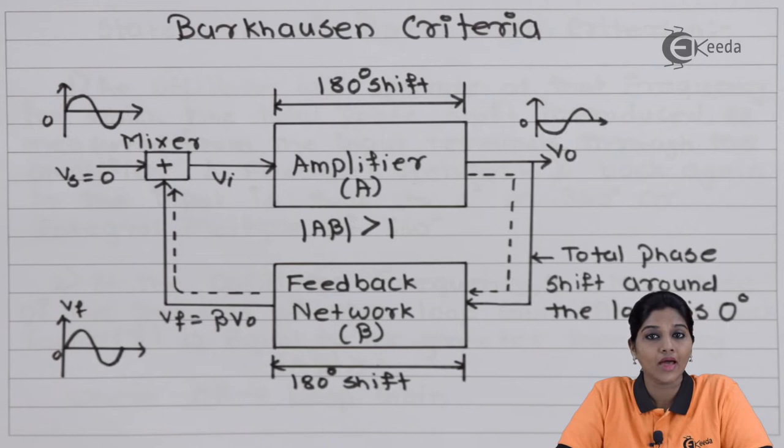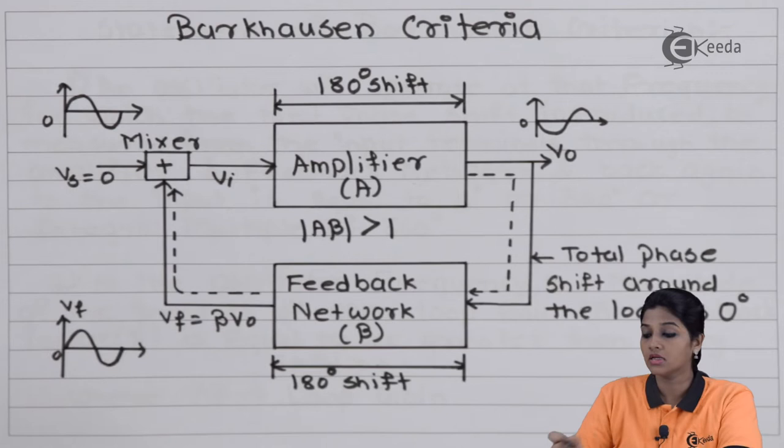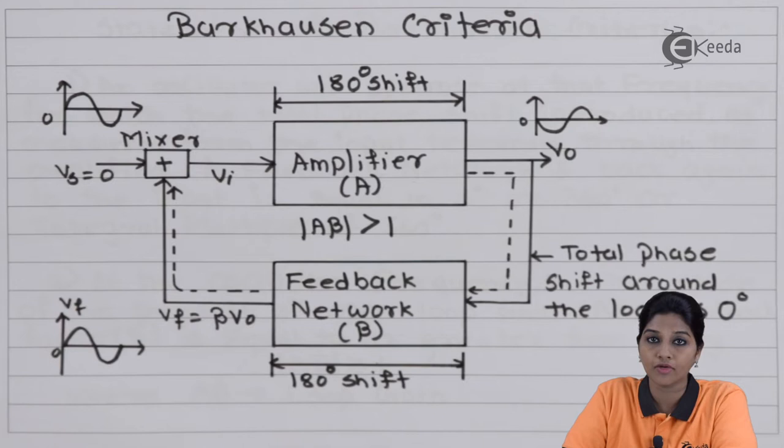From the block diagram, we can see that here the input Vs is equal to zero — that means no input is applied to the amplifier circuit. The mixer circuit is optional; we can directly give the feedback signal to the input of the amplifier. The amplifier circuit has gain equal to A.